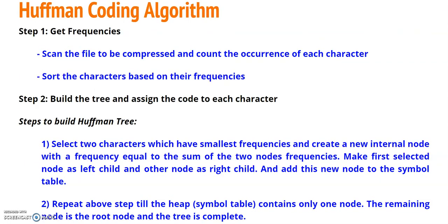Now we will see the steps to follow in Huffman coding to get codes for each symbol. The first step is Get Frequencies: scan the file you want to compress and count the number of occurrences of each character. Sort the characters based on their frequencies — frequencies meaning the number of times the character appears in the string.